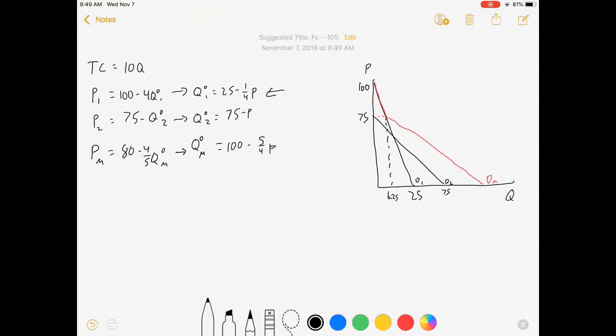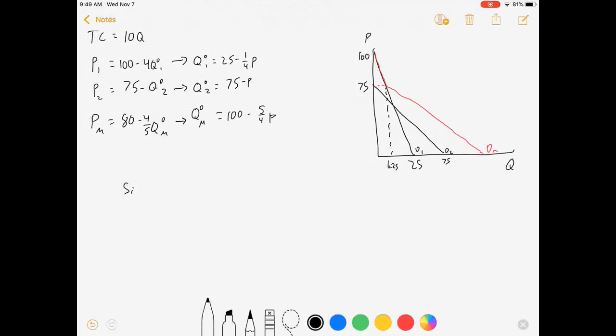Now that we've got that, we want to compare the profit of choosing a single price for our market demand versus choosing individual prices for our two segmented markets. So we'll look at single price versus segment one and segment two, and we'll compare the results.